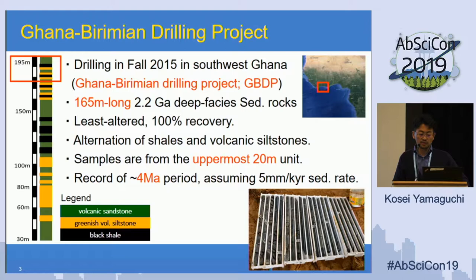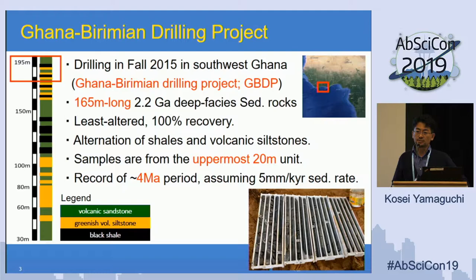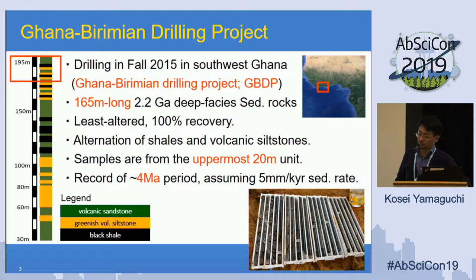These are least-altered samples, and we got 100% core recovery. The core is based on alternation of shales, volcanic siltstones, and sandstones with some coarser grains. For this study, samples are from the uppermost 20-meter unit. If we assume a sedimentation rate of 5 mm per 1,000 years, then this 20-meter section represents a 4-million-year period.